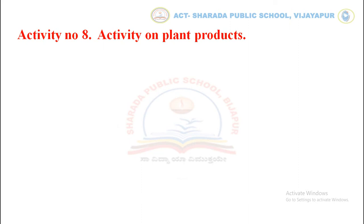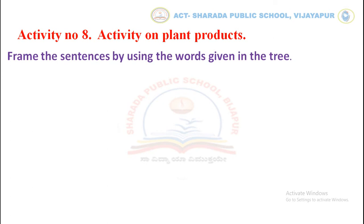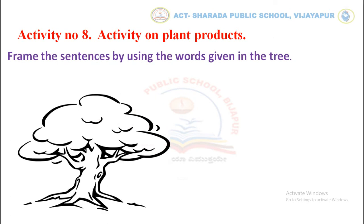Let's move to activity number eight. Which is a plant product? Frame sentences by using the words given in the tree. The words are: seeds, cotton, paper, oat, and gum. Children, today we learnt about types of plants, parts of a plant, and their functions. Thank you.